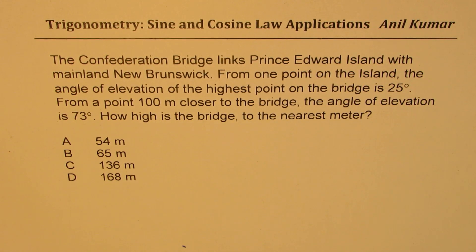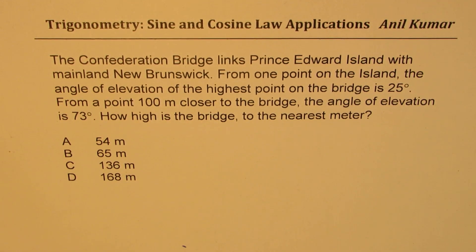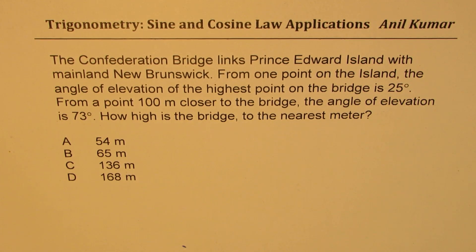The question here is very interesting — it's about the Confederation Bridge, an amazing site. The Confederation Bridge links Prince Edward Island with mainland New Brunswick. From one point on the island, the angle of elevation to the highest point on the bridge is 25 degrees. From a point 100 meters closer to the bridge, the angle of elevation is 73 degrees. How high is the bridge to the nearest meter?